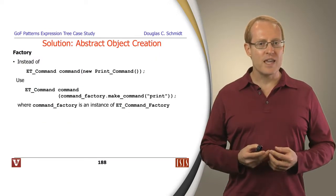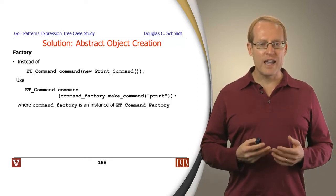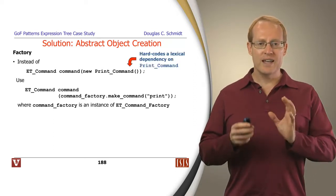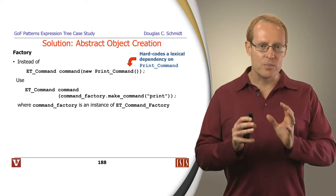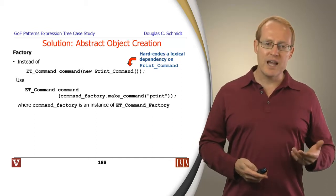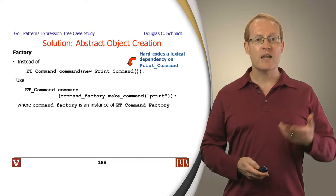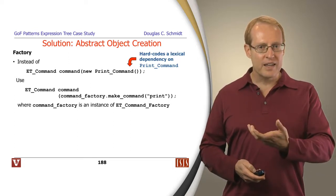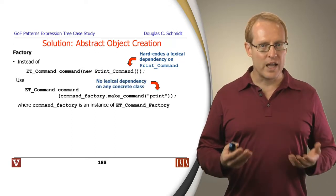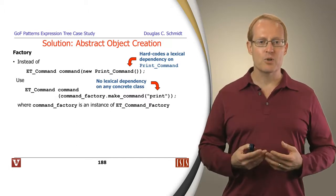The solution we're going to apply is to abstract object creation. Instead of writing something like ET command new print command — where we hard-code a lexical dependency on a particular command subclass like print command — we're going to use a command factory that has a factory method called make command, where we pass in a string indicating what command we want made. One of the nice things about doing this is there are no lexical dependencies exposed to the clients for the specific concrete subclass we're trying to use.